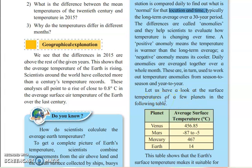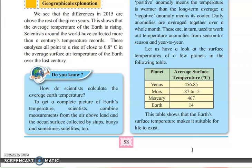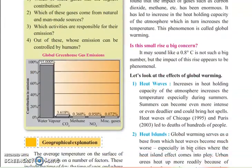To compare a few temperatures across planets: Venus has an average surface temperature of 456.85 degrees Celsius, Mars has minus 87 to minus 5 degrees Celsius, Mercury has 465 degrees Celsius, whereas Earth has only 14 degrees Celsius average surface temperature.